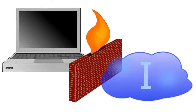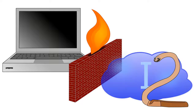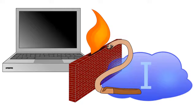Another security measure that helps computers resist worms is the use of firewalls. A firewall is a tool that controls the flow of information between your computer and other network devices. In this illustration, we see a firewall between a computer and a cloud representing the internet. The firewall will prevent unrequested internet traffic, like worms, from accessing your computer. It's a good idea to always run a firewall on your computer.